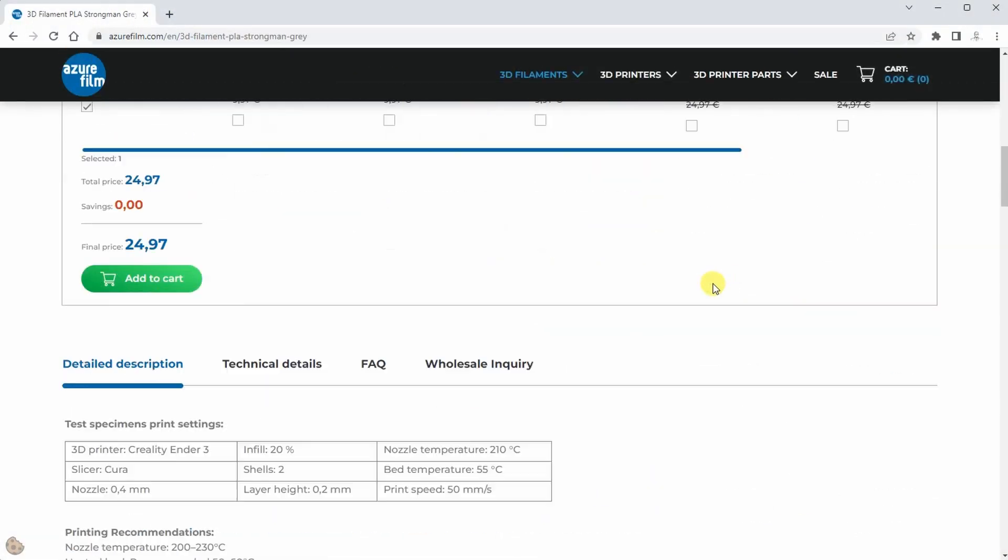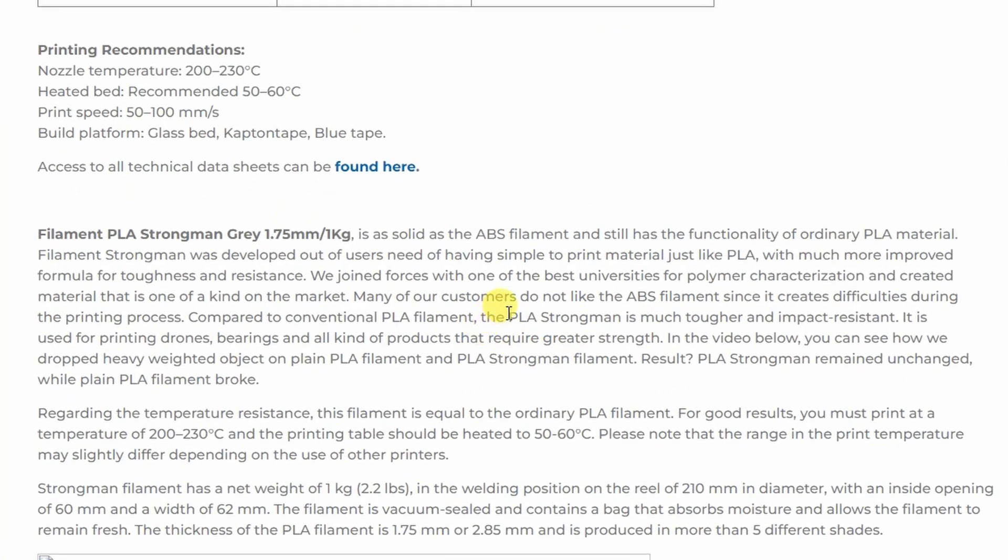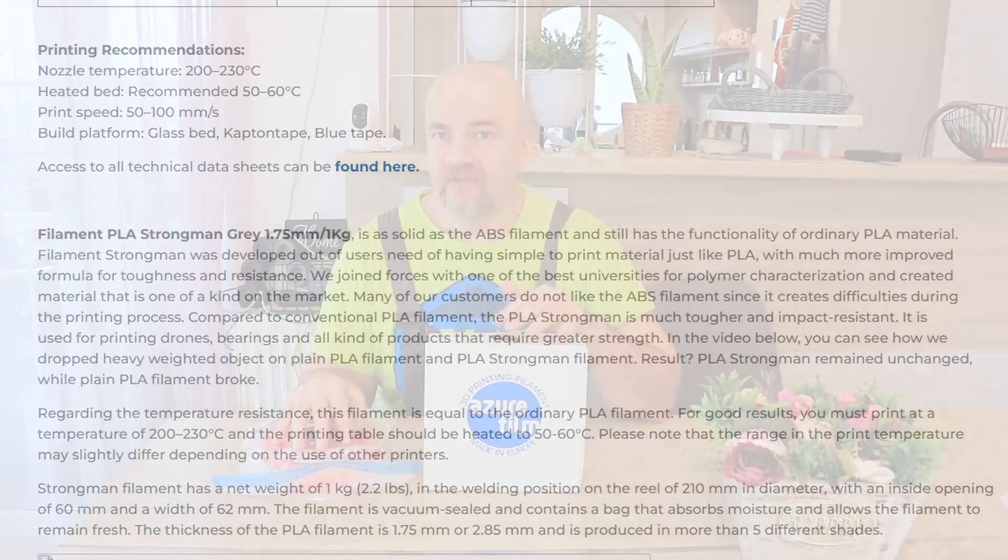In this case, according to their website, the PLA Strongman is tougher and more impact resistant compared to regular PLA, but they have the same temperature resistance, approximately 50-55 degrees Celsius. This will be tested too.